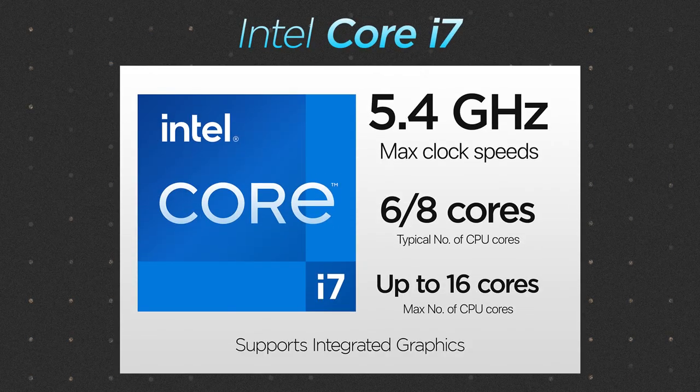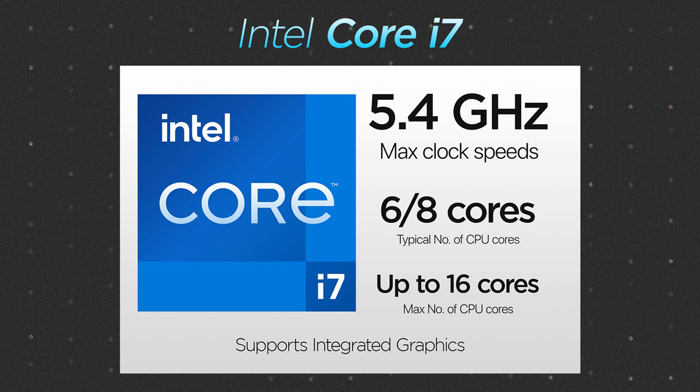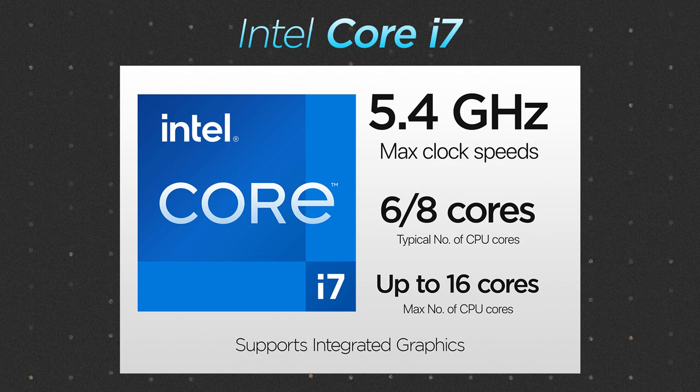Then we have the Core i7 processors, designed for users who need even more performance than the i5s. Core i7s typically have six to eight cores with clock speeds of up to 5.4 GHz. These processors also have more advanced features like Hyper-Threading, which allows each core to handle two threads simultaneously — effectively doubling the number of processing threads available. Core i7 processors are a good choice for users who need high-performance computing for tasks like video editing or 3D modeling.